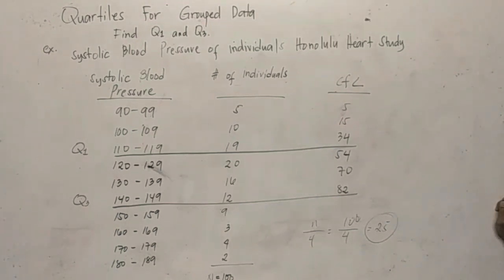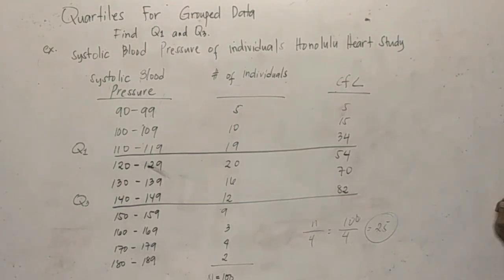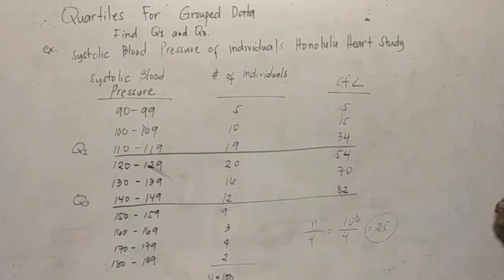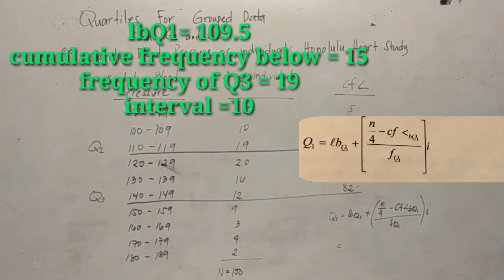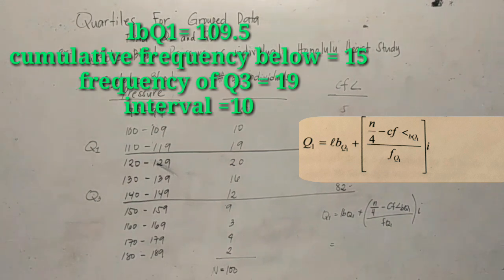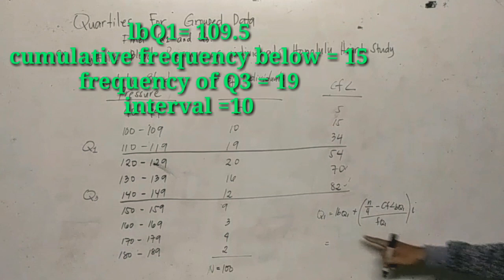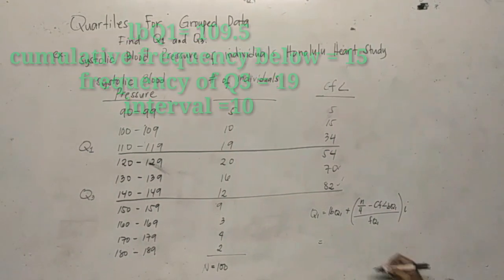Next, we find the lower boundary of Q1. To get the lower boundary, we subtract 0.5 from the lower limit of the Q1 class. So the lower boundary of Q1 is 110 minus 0.5, which gives us 109.5.